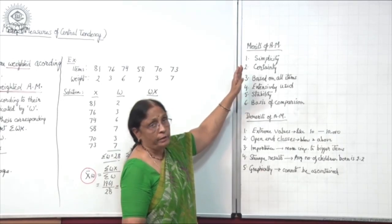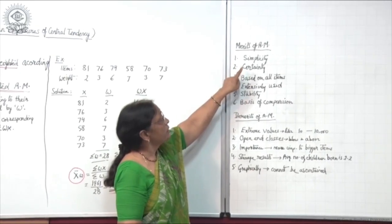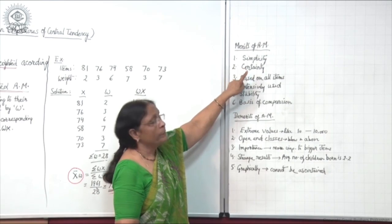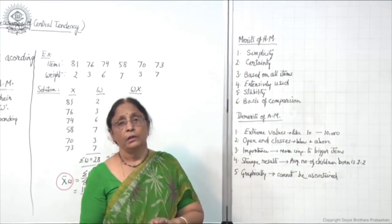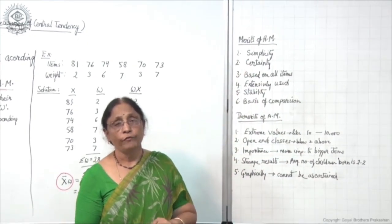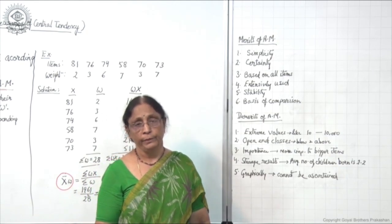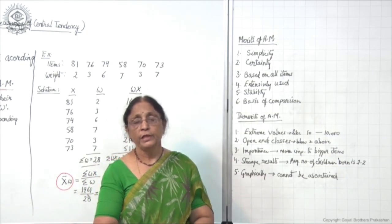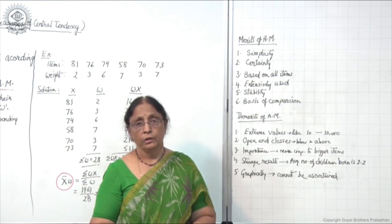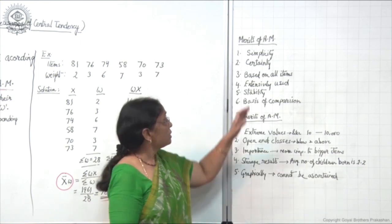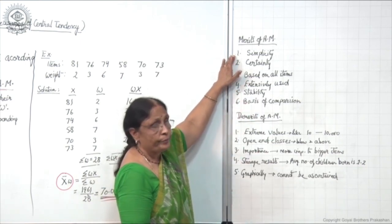Merits of arithmetic mean. The first merit is simplicity. It is a very simple way of calculating arithmetic mean — a very simple calculation, easy to understand. So it has the quality of simplicity.